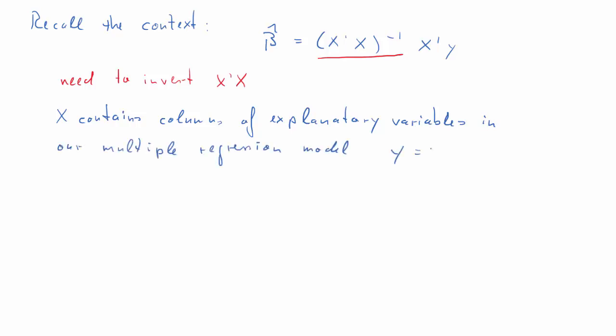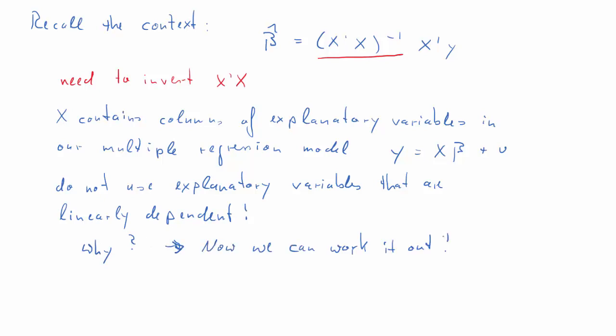x, of course, in our context, contains columns with explanatory variables in our multiple regression model. This was the regression model. And you may recall from your econometrics class that you've been told to not use explanatory variables that are linearly dependent. Why was that so? Well, now we can work it out. And we'll use a couple of examples.